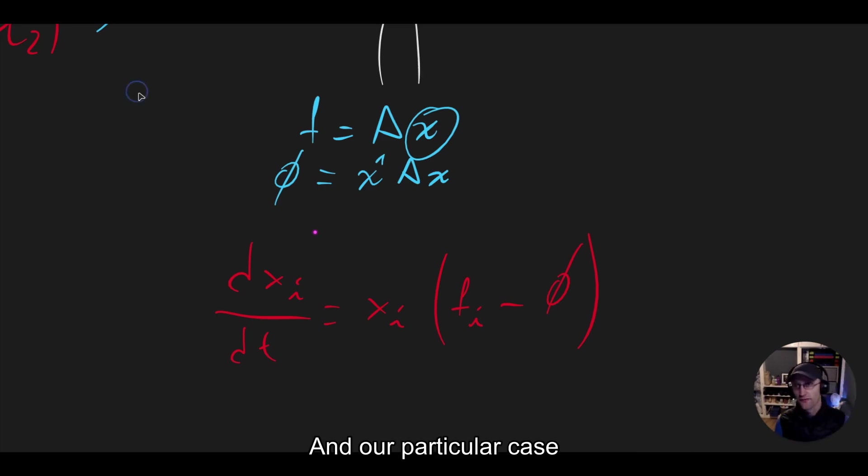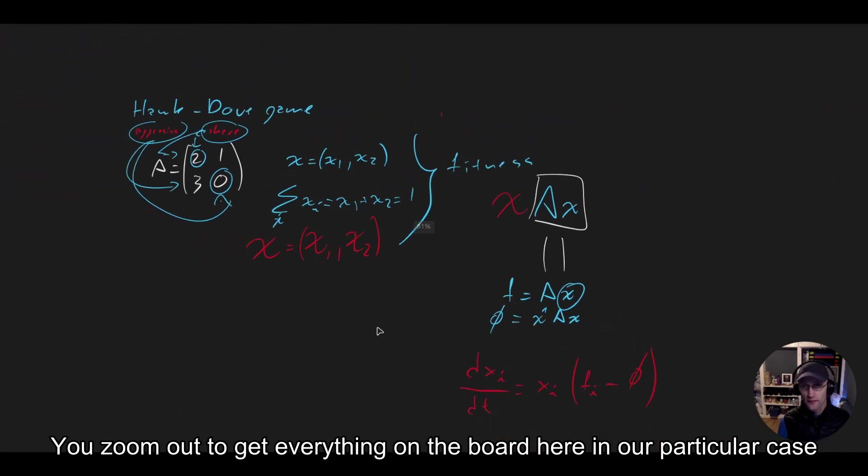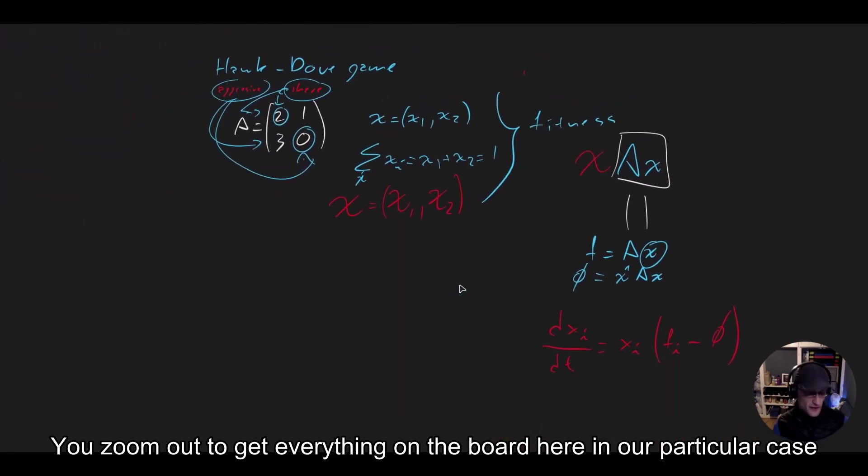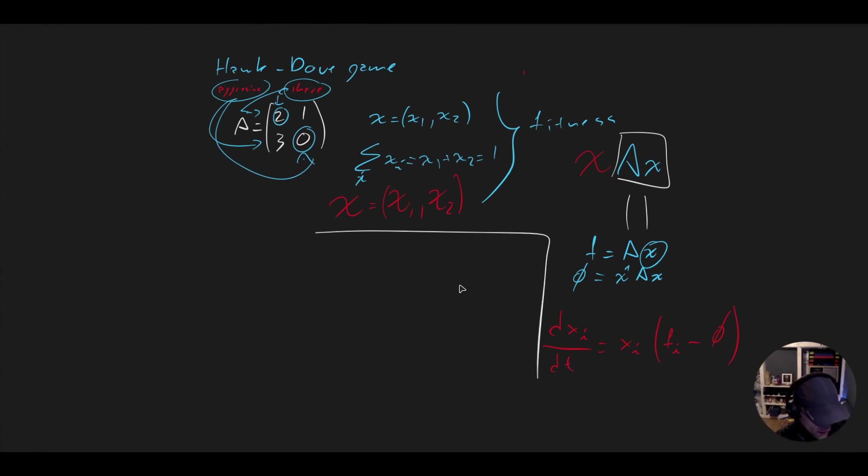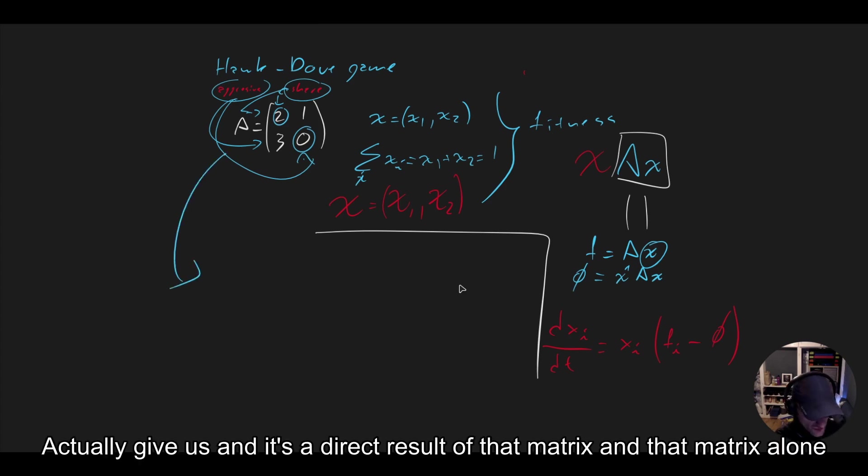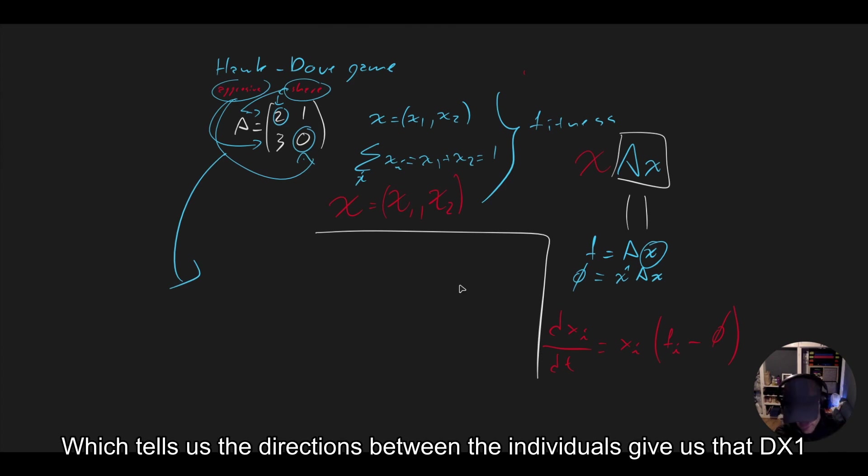In our particular case, let me zoom out to get everything on the board here. In our particular case, we can make all these calculations and we can obtain that the differential equations that dictate the situation we have actually give us, and it's a direct result of that matrix and that matrix alone, which tells us the interactions between the individuals.